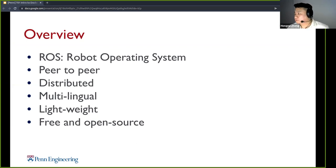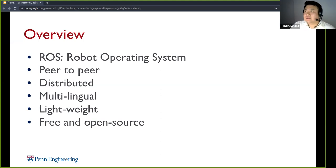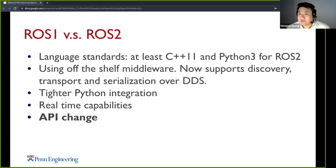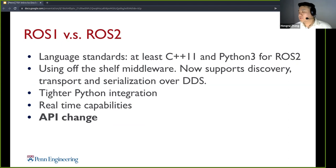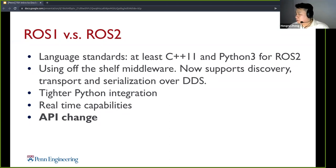So the overview — most of you might already know this — the Robot Operating System. It's supposed to be peer-to-peer, distributed, and multilingual, meaning you can do it in C++, Python, MATLAB, Java, and even C# now. It's supposed to be lightweight, free, and open source. Between ROS 1 and ROS 2, the first change is that they updated the language standards — you need at least C++11 and Python 3 for ROS 2. It uses off-the-shelf middleware now, supporting discovery, transport, and serialization over DDS, which is a little bit faster and neater than ROS 1's middleware. It also has tighter Python integration — if you've used Python in ROS 1, you'll remember the API is not in the same style as the C++ one.